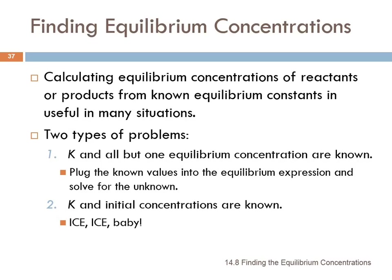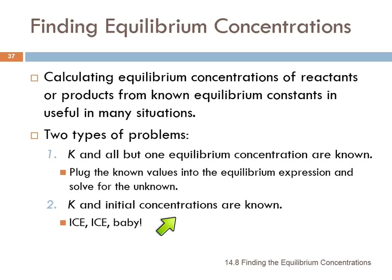The second case is what is more common. Here we know the initial concentrations of the reactants and products, and we know the equilibrium constant, and the way we solve this is with an ICE table.